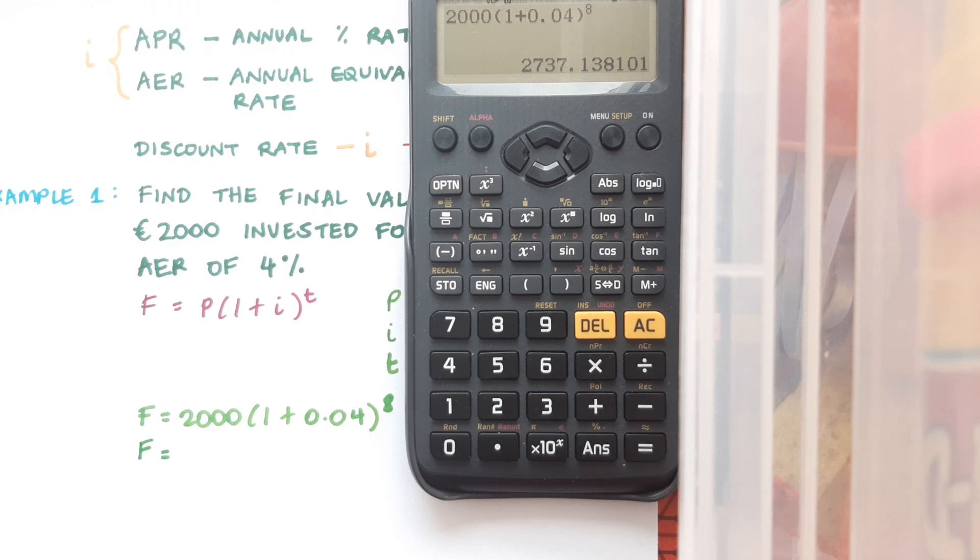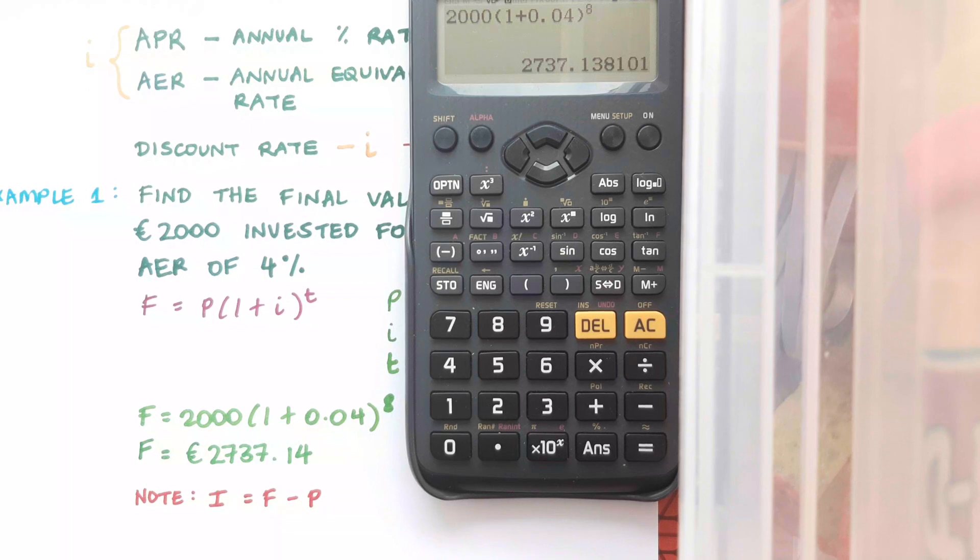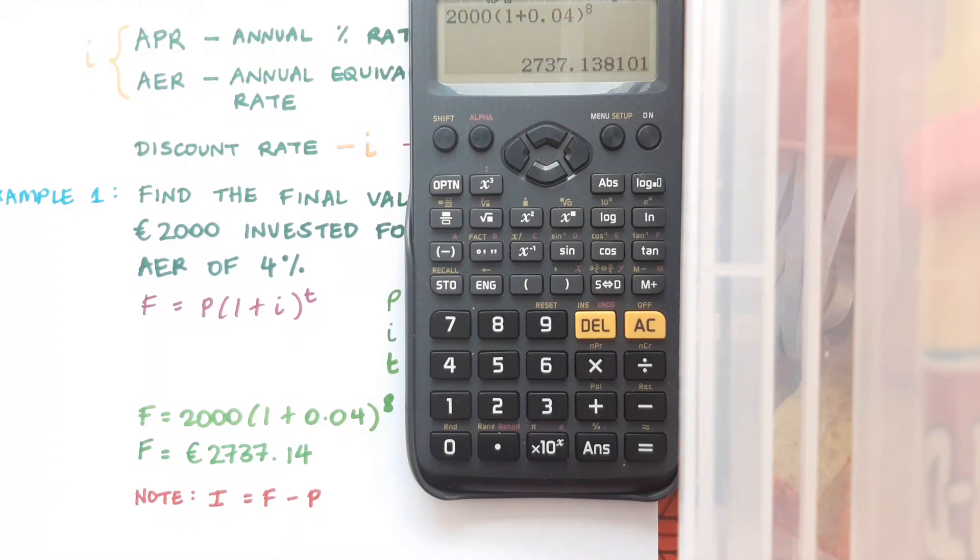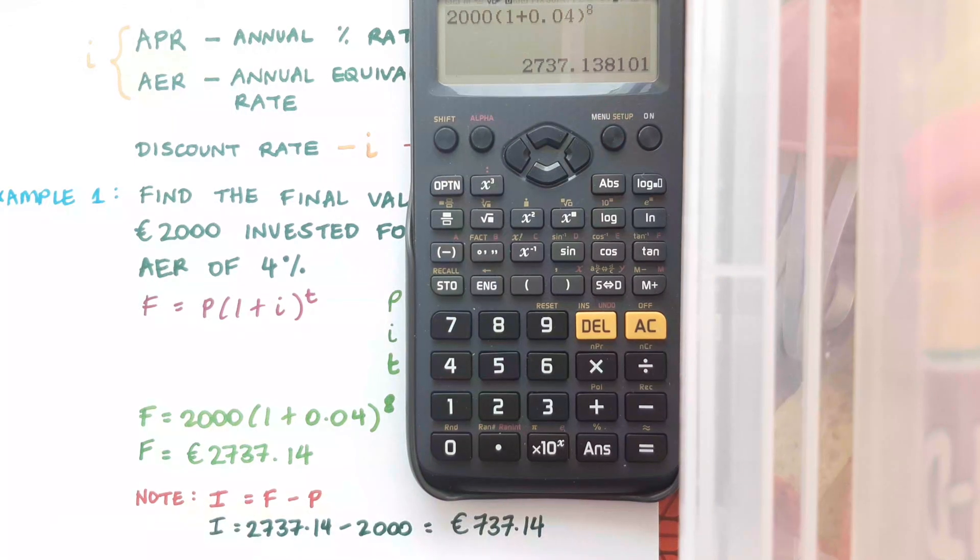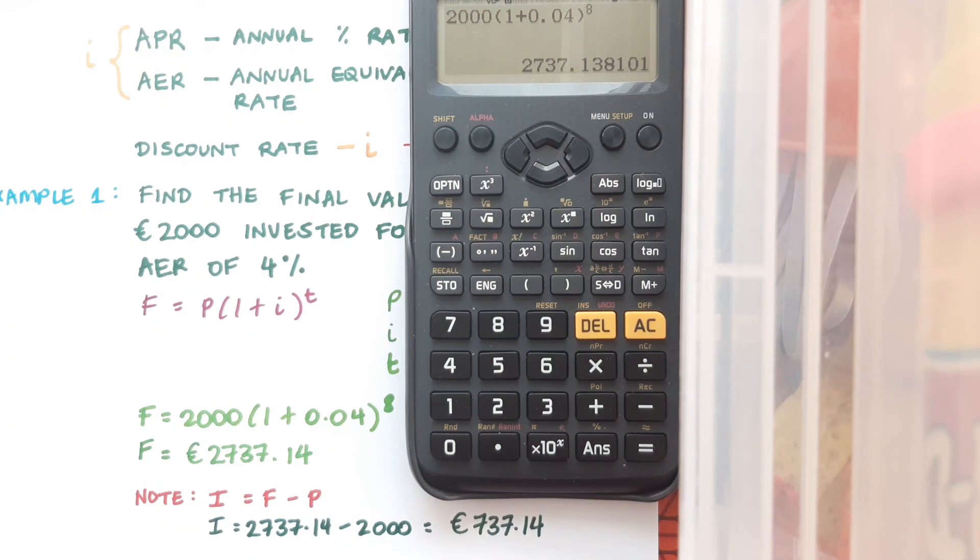In this case I get 2737.138101. But I'm asked in the question to give my answer to two decimal places. So my final value there is €2737.14. And it kind of makes sense to round it off to two decimal places here because I'm dealing with money. The question just asked me to find the final value here, but just note that if I was asked to find the total interest earned I could calculate it by subtracting the present value or principal from this final value. And in this case that's €737.14.